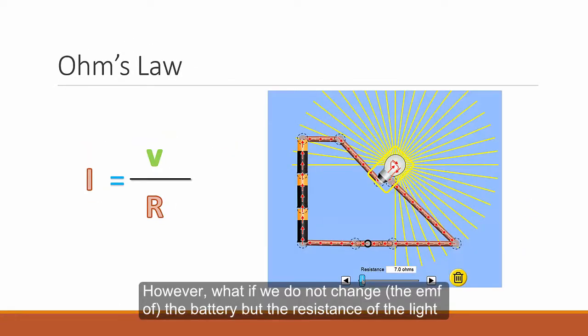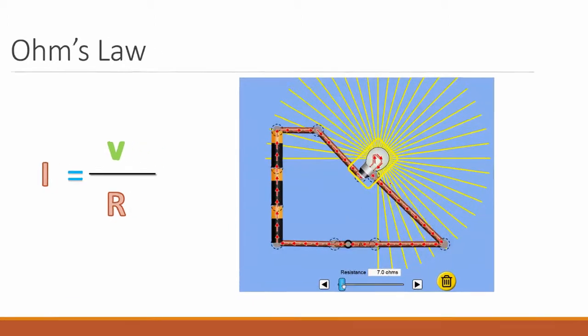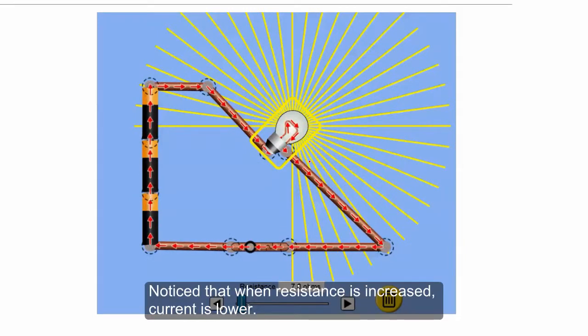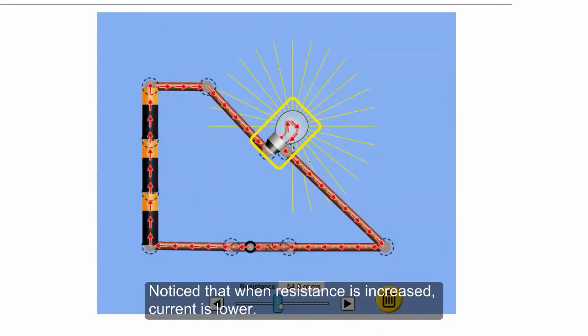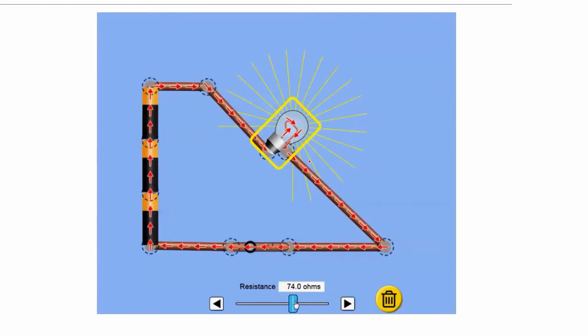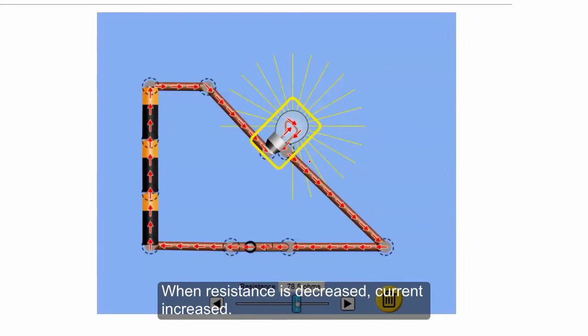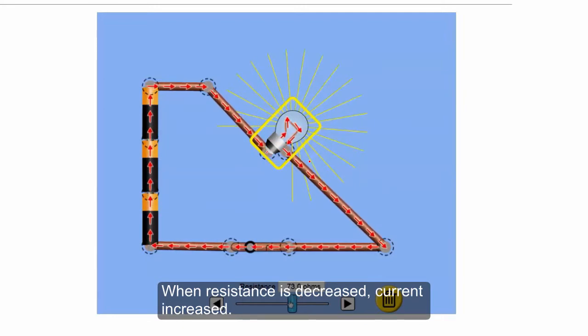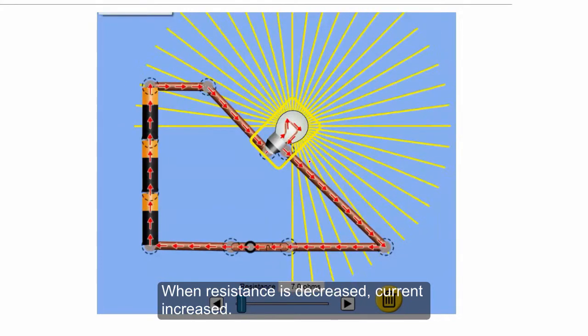However, if you do not change the EMF of the battery, but the resistance of the light bulb is changed, as we increase the resistance, you notice that the current slows down. But when the resistance is decreased, the current goes bigger again.